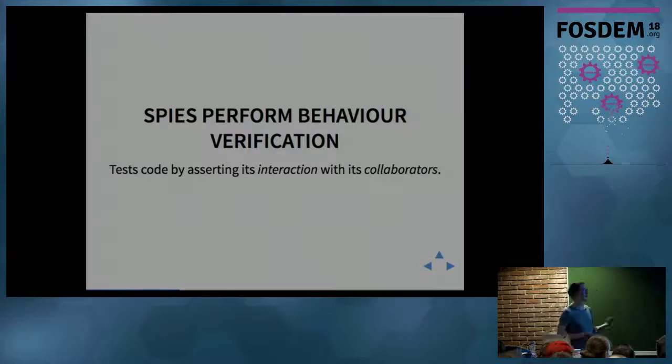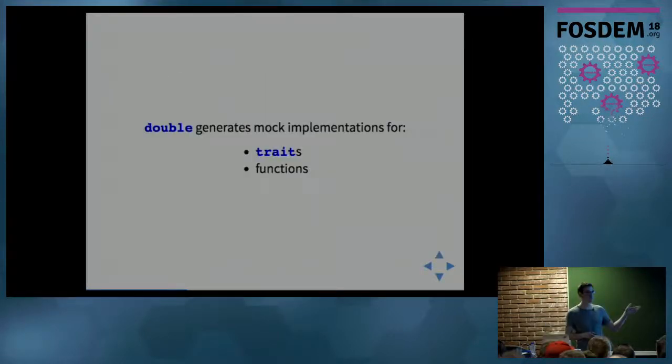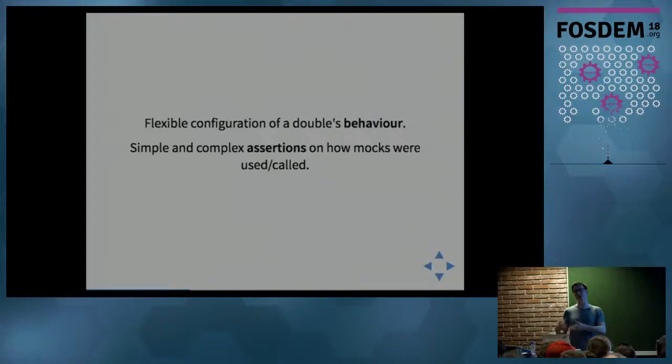In Rust, we can generate test doubles in a variety of ways. Two ways with the double crate are by generating mock implementations of traits and also generating mock functions. You can flexibly configure the various behavior - what it returns, does it run a function, does it error - as well as simple but also quite nuanced assertions about how it was called and how it was used.